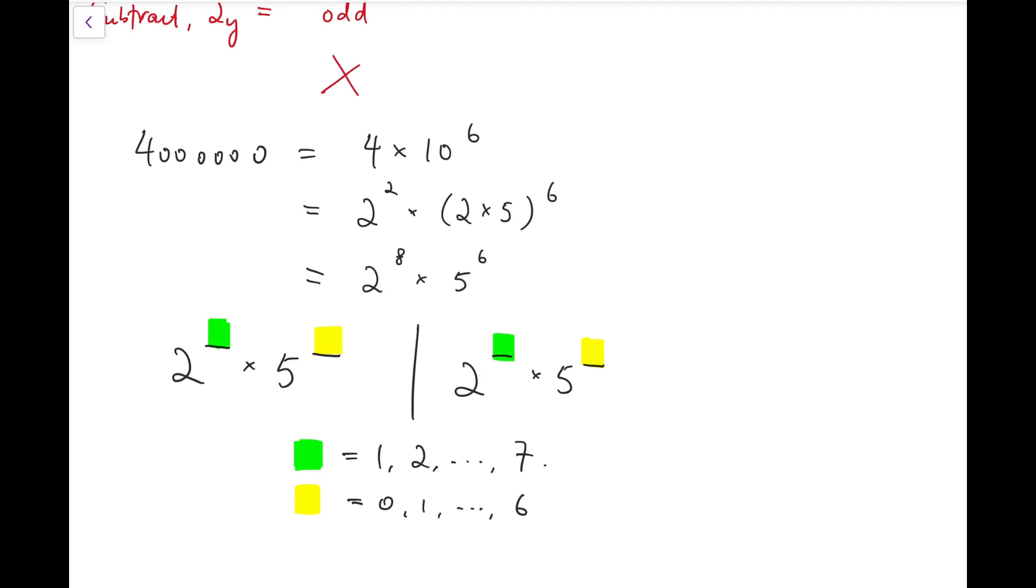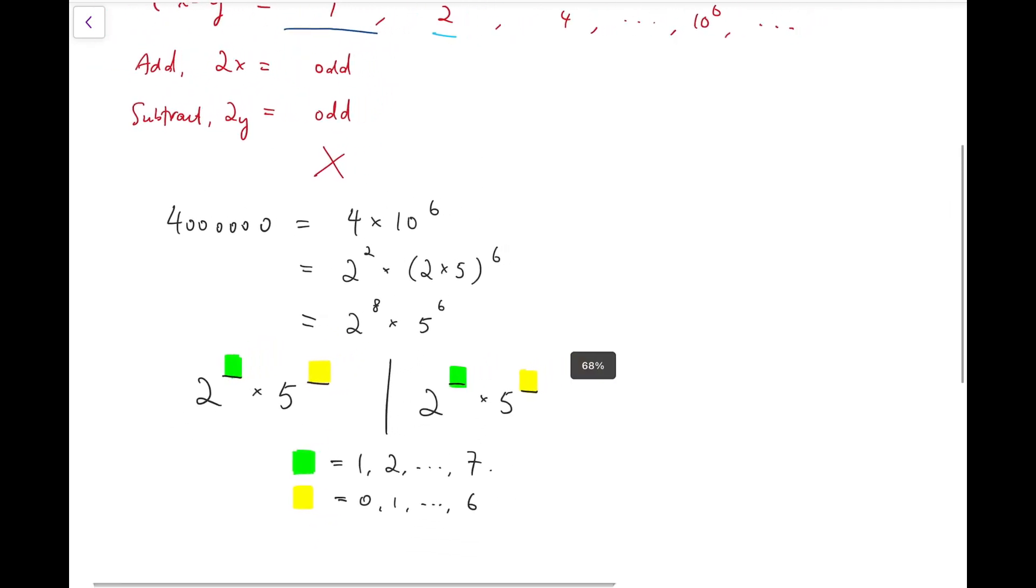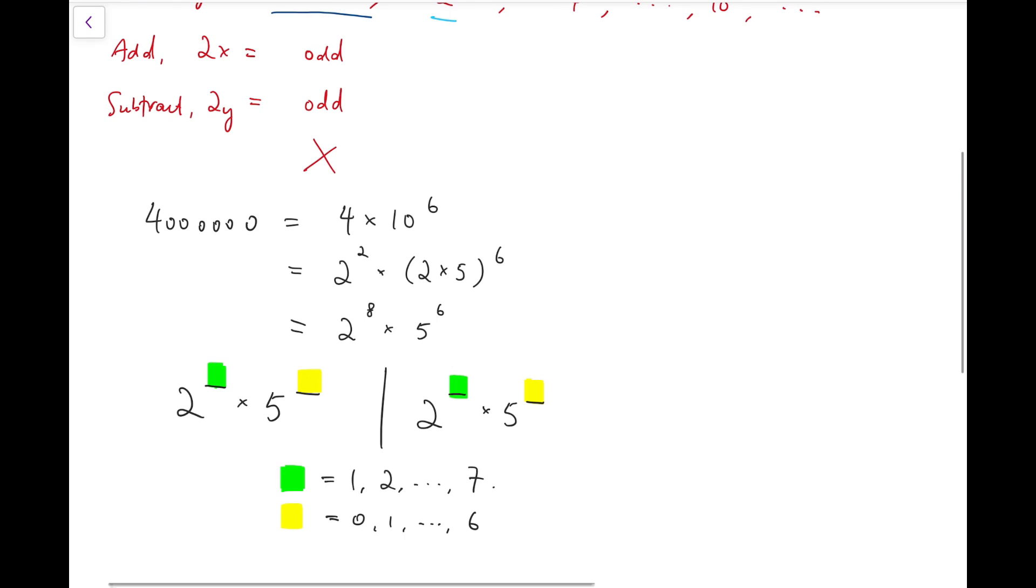So there are 49 cases among the system. 7 times 7, which is 49 even factors.